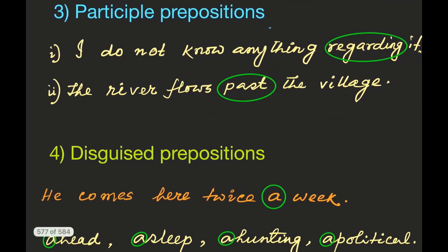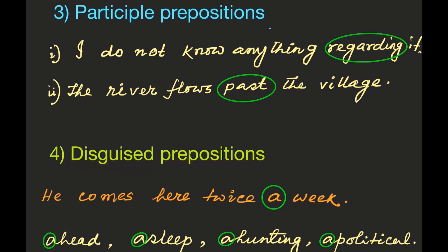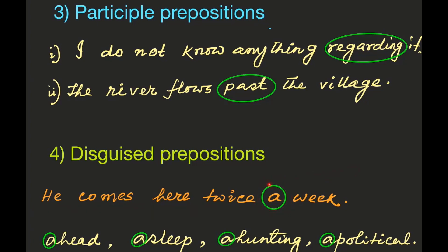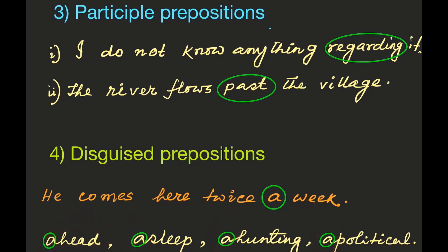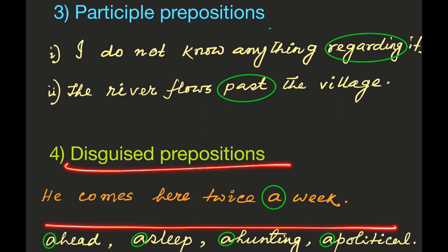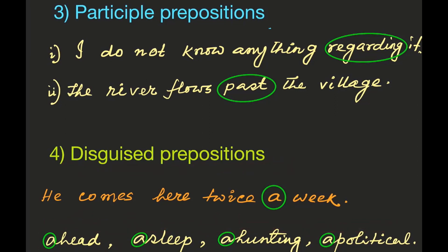Number four: disguised prepositions. Example: 'He comes here twice a week.' Here 'a' is not an indefinite article — 'a' is a shortened form of 'on,' and it is called a disguised preposition. The same is the case with 'ahead,' 'asleep,' 'a-hunting,' 'a-political' — the 'a' at the beginning is the disguised preposition. These are a few examples of disguised prepositions in English.